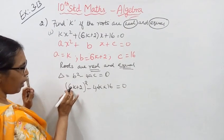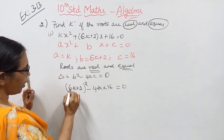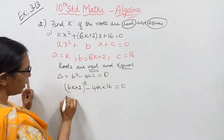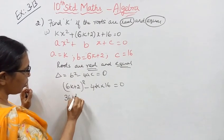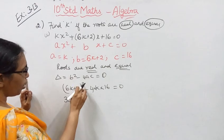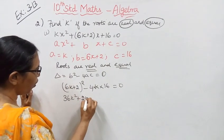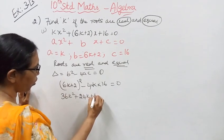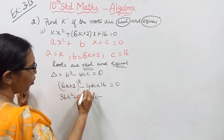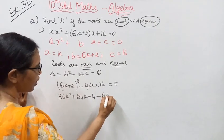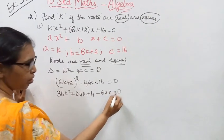Now using (a+b)² formula: (6k+2)² = 36k² + 2 times 6k times 2 which is 24k, plus 2² which is 4, minus 4 times 16, which is 64k, equal to 0.